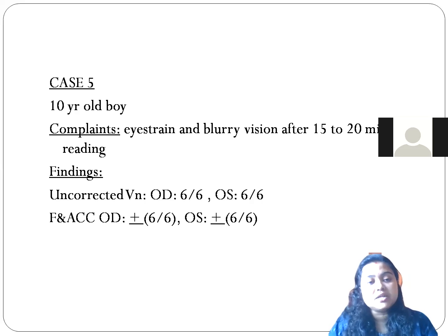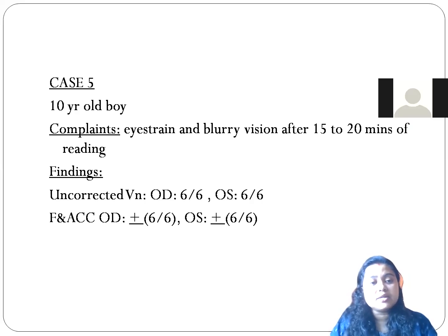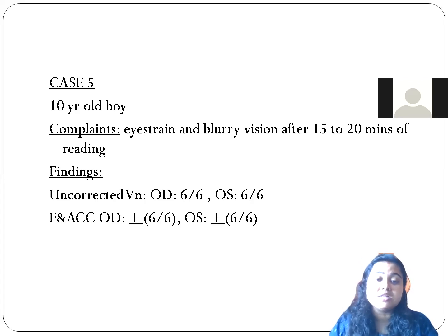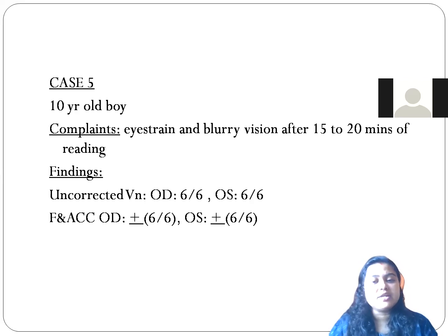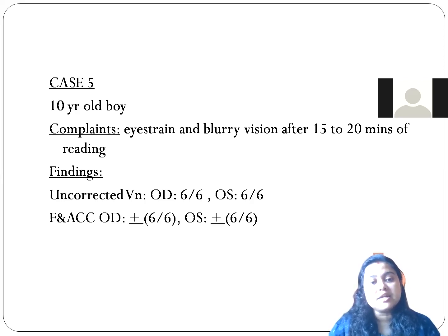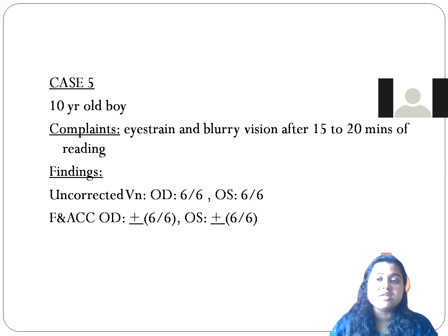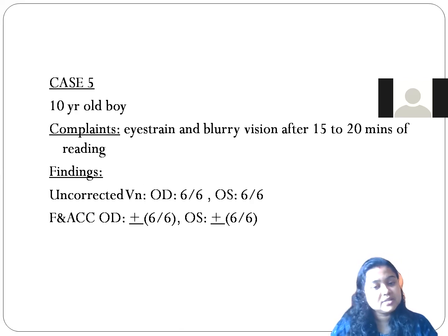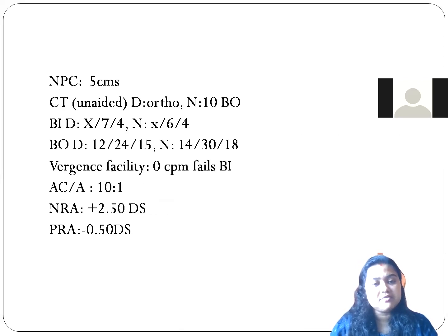Coming to Case 5: a 10-year-old boy came to a clinic with eye strain and blurry vision after 15 to 20 minutes of reading. His uncorrected vision is 6/6 in both eyes, and retinoscopy and acceptance are also 6/6, meaning there is no refractive error.